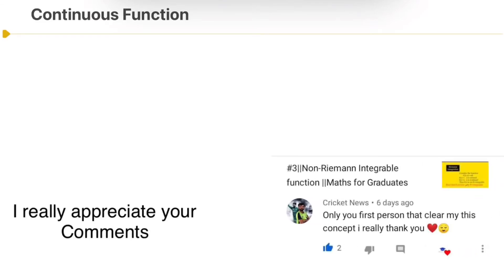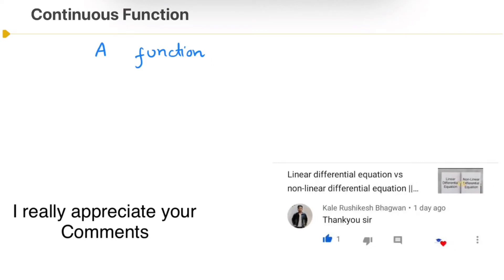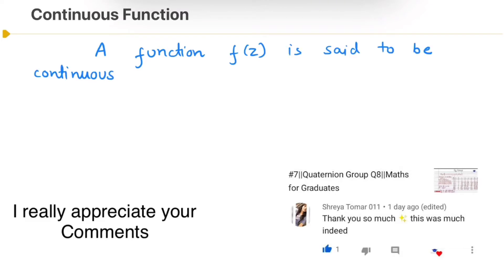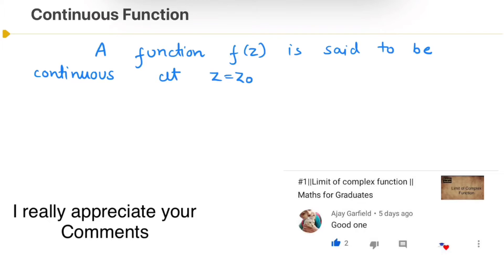So let's start. A function f is said to be continuous at z = z₀ if the following two conditions are satisfied.